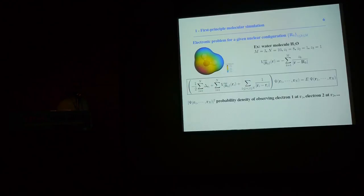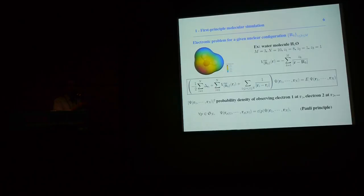From a physical viewpoint, E is the energy of the steady state, and the square of the modulus of psi provides the probability density of observing the first electron at R1, the second at R2, and so on. Electrons are fermions — unlike the bosons discussed earlier — and because of that, the wave function must satisfy an anti-symmetry property, which is a pain to deal with, but we have no choice.